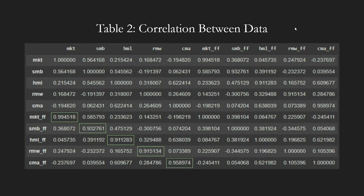In Table 2, we show the correlation between all factors in the data. Similar to the three-factor model, we are interested in the three boxed values, which compare our data to their corresponding Fama-French data. All five correlations are greater than 0.9, showing a reasonably accurate replication once again.